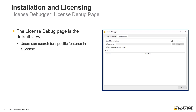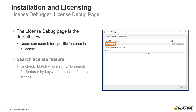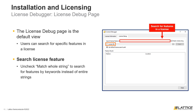By default, the license file in Radiant's installation directory is the one being searched. The file being searched can be changed by selecting the License File option, which allows users to select a different license file. Specific features in a license can be searched for using the Search License Feature entry field, and any valid features that match the search settings will appear at the bottom of the license debugger window.